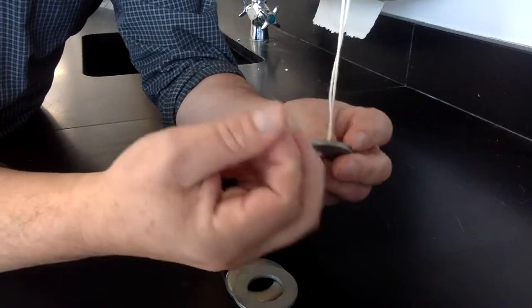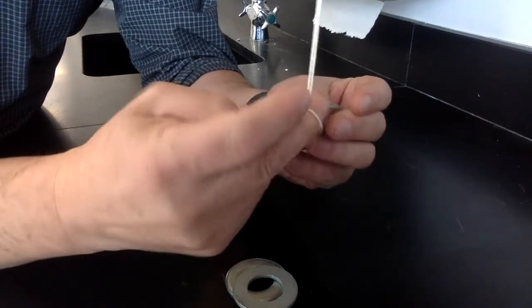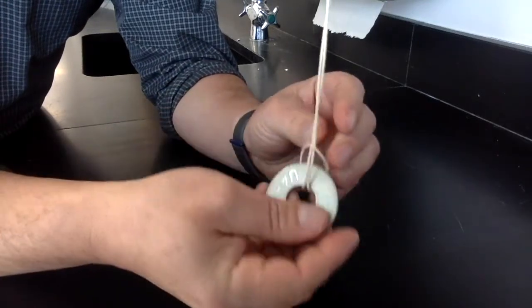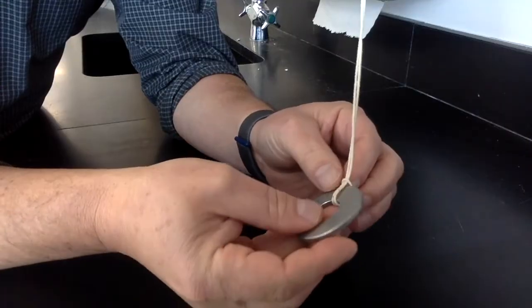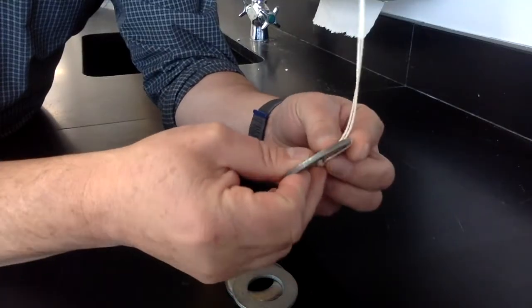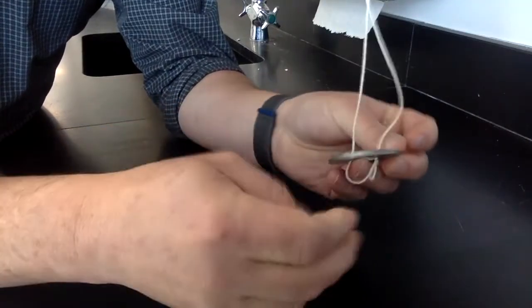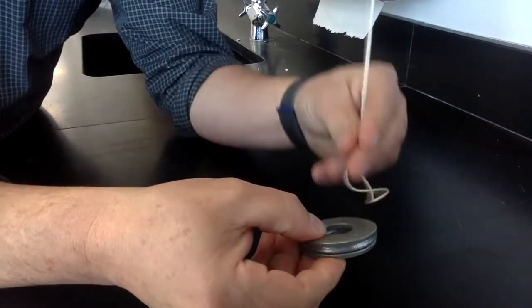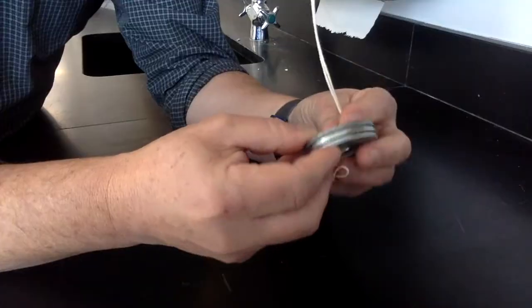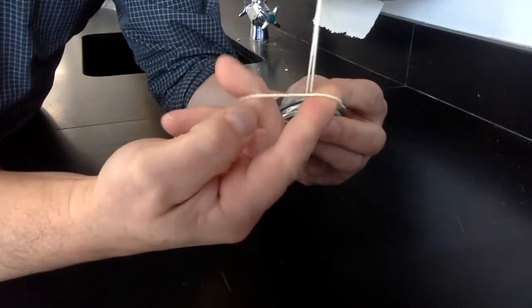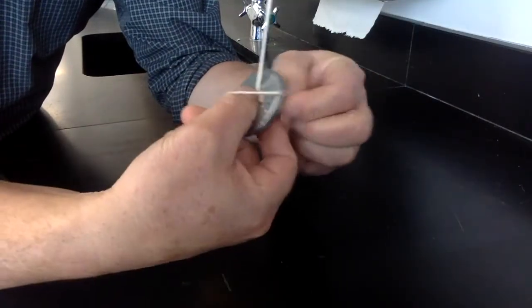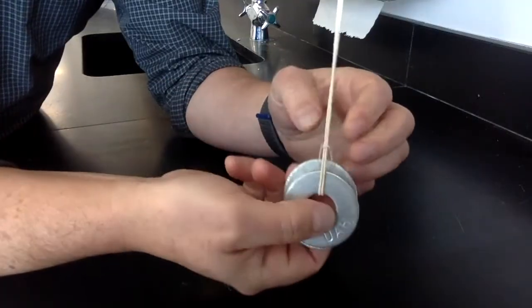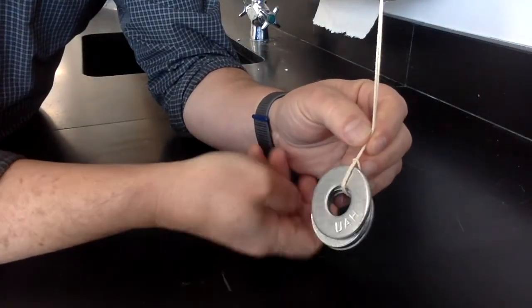If we need to add more washers, it is a simple matter of stacking the washers together, sliding the string's loop through the hole of the washers, and then sliding the washers through the loop in the string.